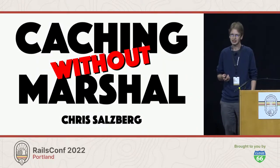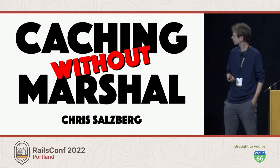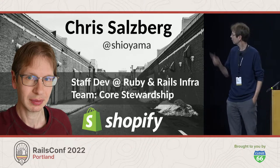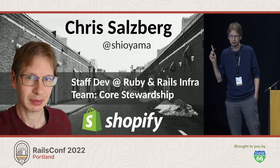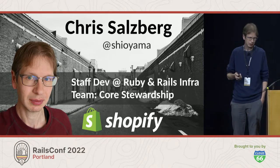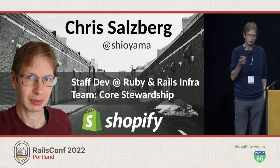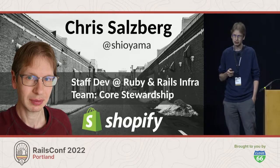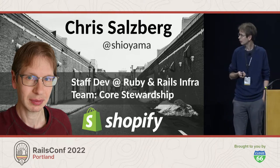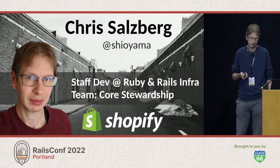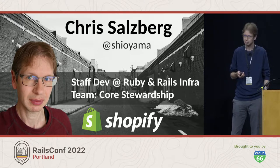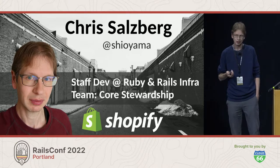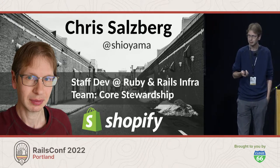Hi everybody. The title of this talk is Caching Without Marshall. My name is Chris Salzberg. I'm a staff developer at Shopify. The background for this slide is a city in the north of Japan, which is where I live. I'm on the Ruby and Rails Infra group, of whom many members are here at this conference and speaking. I'm in a smaller team, about five developers, called core stewardship.